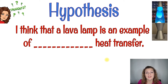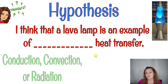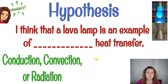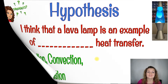We're going to see the movement happening. First, I need you guys to complete your hypothesis. It says: I think that a lava lamp is an example of a blank heat transfer. You're going to write down whether it is conduction, convection, or radiation. Then we are going to go ahead and take a closer look at the lava lamp and kind of figure it out together.